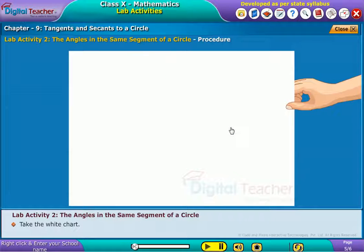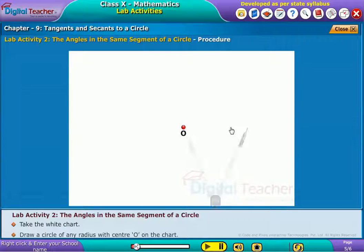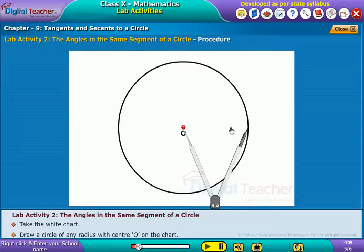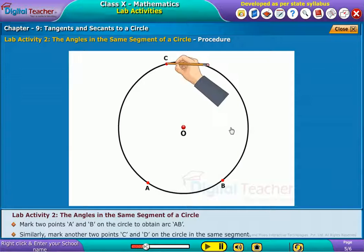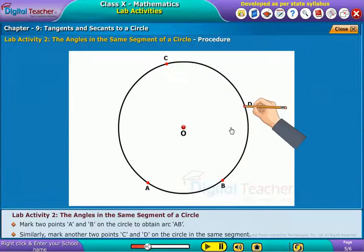Take the white chart. Draw a circle of any radius with center O on the chart. Mark two points A and B on the circle to obtain arc AB. Similarly, mark another two points C and D on the circle in the same segment.